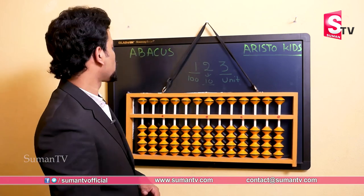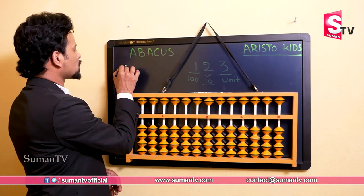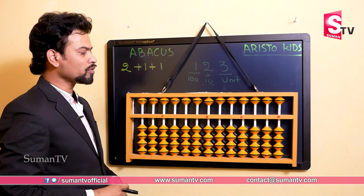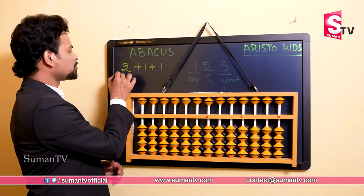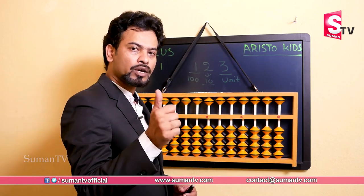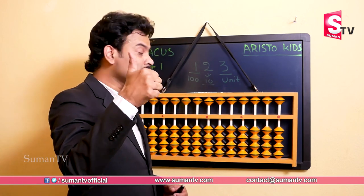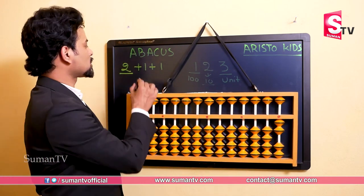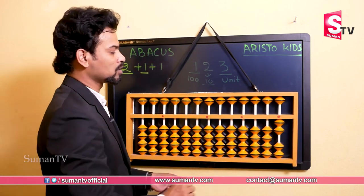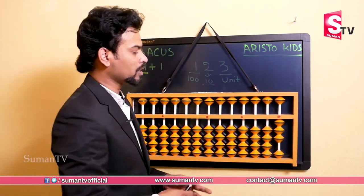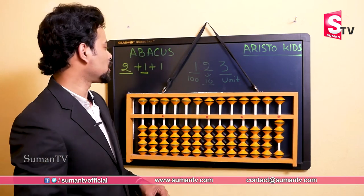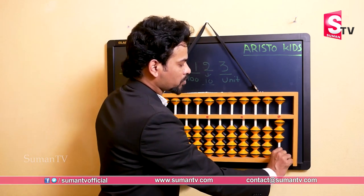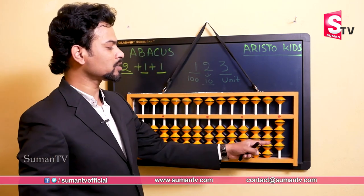Let's do a small calculation: two plus one plus one. The first number is two, so we make two beads up with the thumb — one and two. Then the next step is plus one, so again one bead up — answer is three. Then again plus one — the answer is four. That's how we do addition.